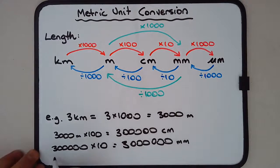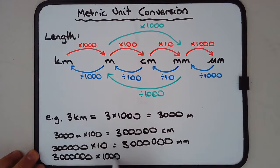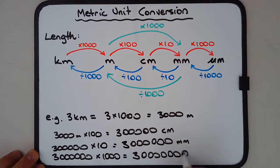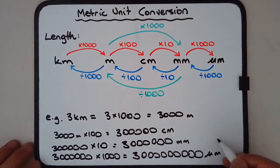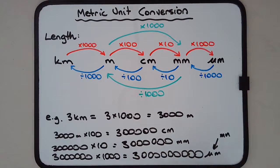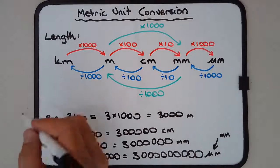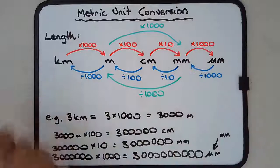Millimeters to micrometers: multiply by a thousand again, giving us three with nine zeros — three billion micrometers. The symbol is this funny u-shape called mu, M-U, the Greek letter for M, and it means micrometers. Going backwards from micrometers to kilometers, we follow the blue arrows — instead of multiplication, we use division.